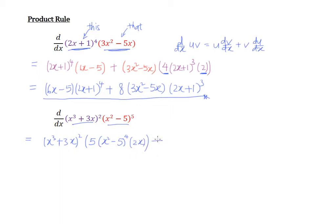And plus — now we're going to keep the red term and differentiate the purple term. Differentiating the purple gives us 2 times (x cubed plus 3x), with the power reducing to 1. We also have to differentiate the inside, giving extra terms like 3x squared plus 3.